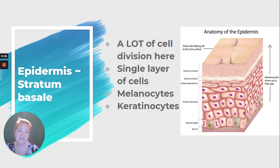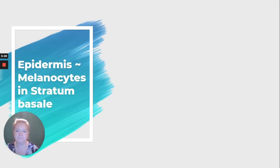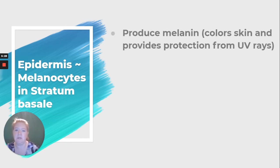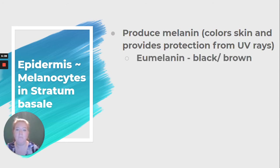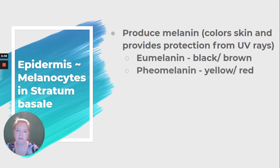The stratum basale sits on that basement membrane. The melanocytes produce melanin — melanin colors our skin and provides protection from ultraviolet rays. Eumelanin produces black and brown pigments, and pheomelanin produces yellow and red pigments.